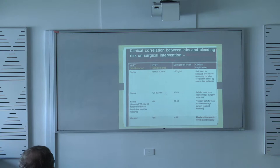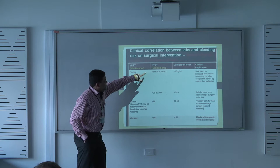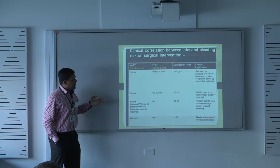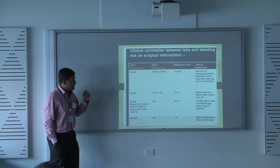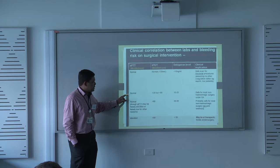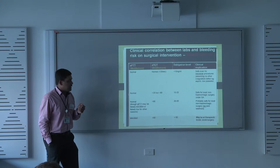This tells you about the clinical correlation between the laboratory findings and the bleeding risk in surgery. If the TCT is normal, that means there is no Dabigatran in the system, and you can safely do even lumbar punctures. We do not recommend doing lumbar punctures or spinal procedures if the TCT is abnormal. If TCT is mildly elevated, there is some Dabigatran in the system but not high enough, and most surgeries are safe — proceed with surgery under general anaesthesia, but do not do spinal.